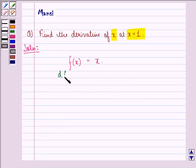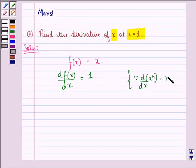So df(x)/dx will be equal to 1. Now this happens because we see that d/dx of x^n is equal to n times x^(n-1).